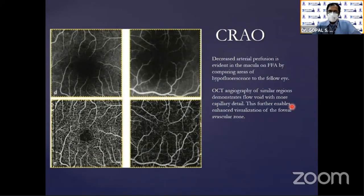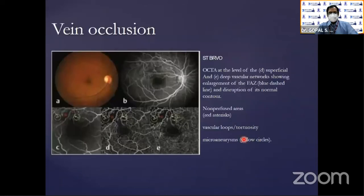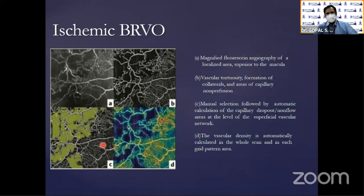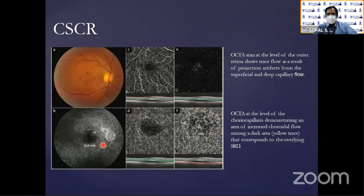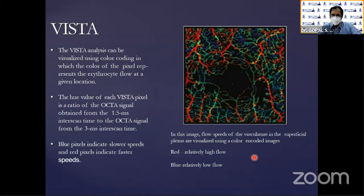In central retinal artery occlusion, you can see reduced arterial perfusion. In BRVO, you can see segmental drop of flow. In CRVO with cystoid macular edema, you can see cystoid spaces in different layers, and wherever it is ischemic, you can see hypoperfusion. In central serous retinopathy, OCTA at the level of the choriocapillaris demonstrates increased choroidal flow corresponding to the overlying sub-macular detachment. VISTA is a color analysis in which the color of the pixel represents the erythrocyte flow — red means relatively high flow and blue means relatively low flow. These new developments in OCT and OCT angiography will help us understand and monitor diseases much better.